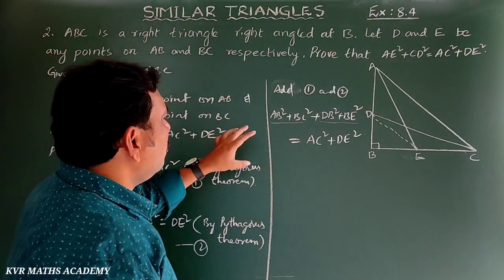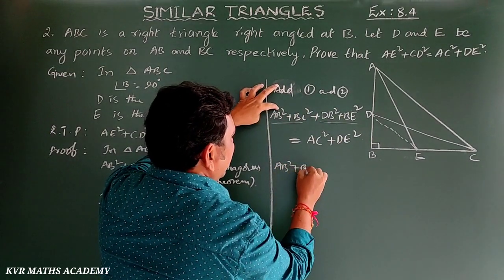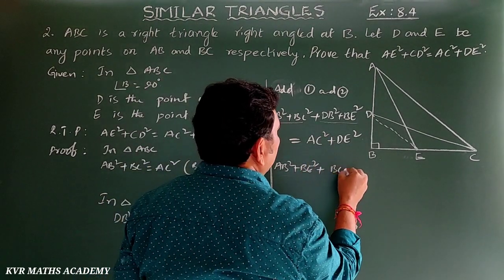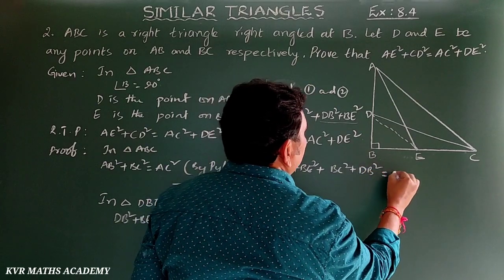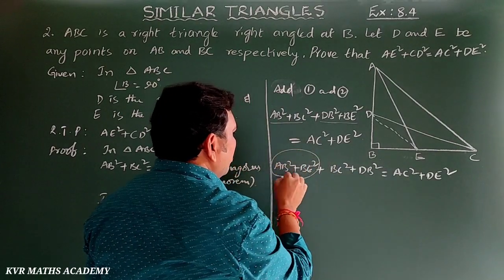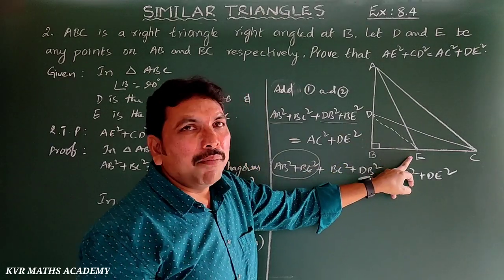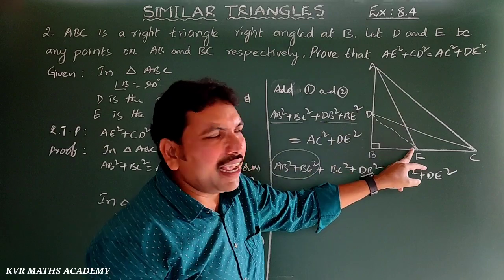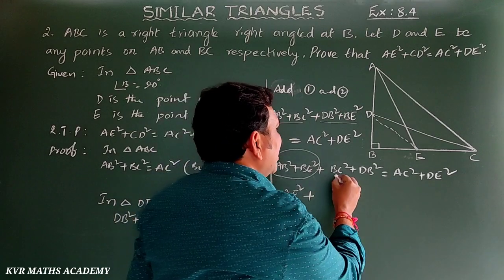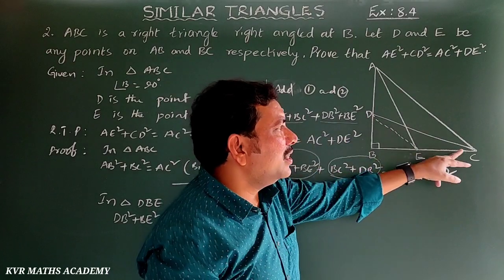For getting the proof, combine as: (AB² + BE²) + (BC² + DB²) = AC² + DE². By Pythagoras theorem in triangle ABE, AB² + BE² = AE². And BC² + DB² = CD².